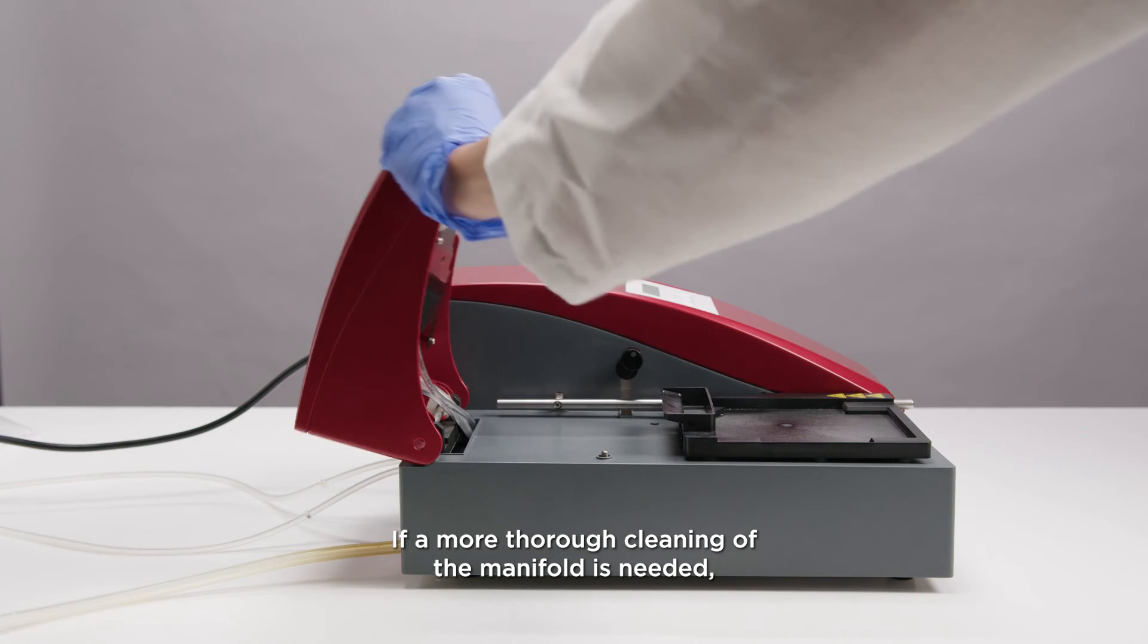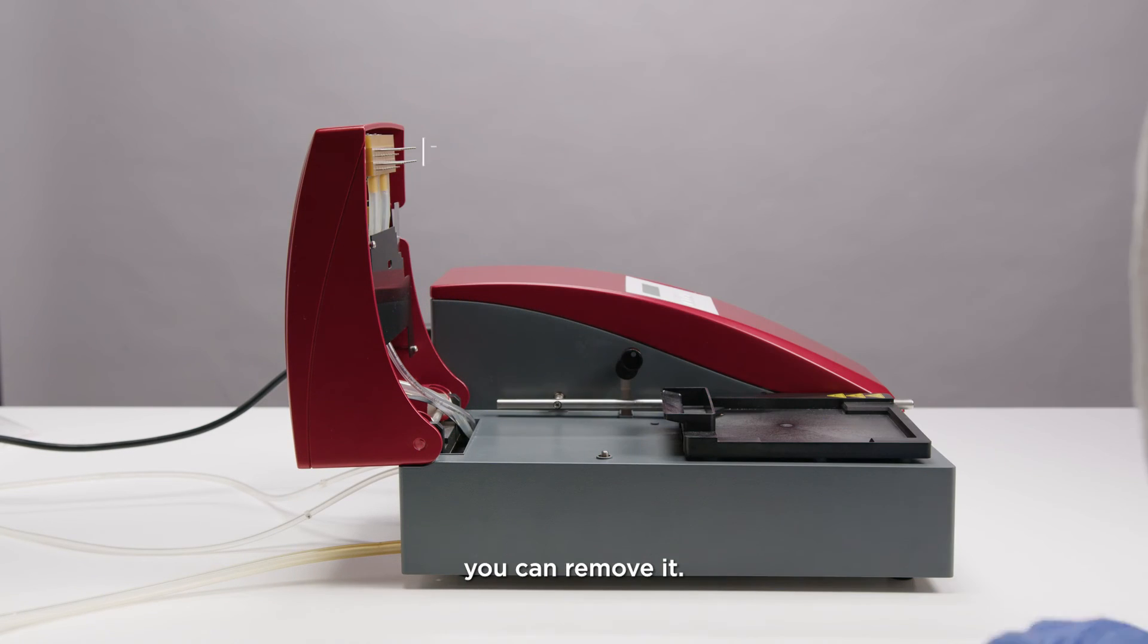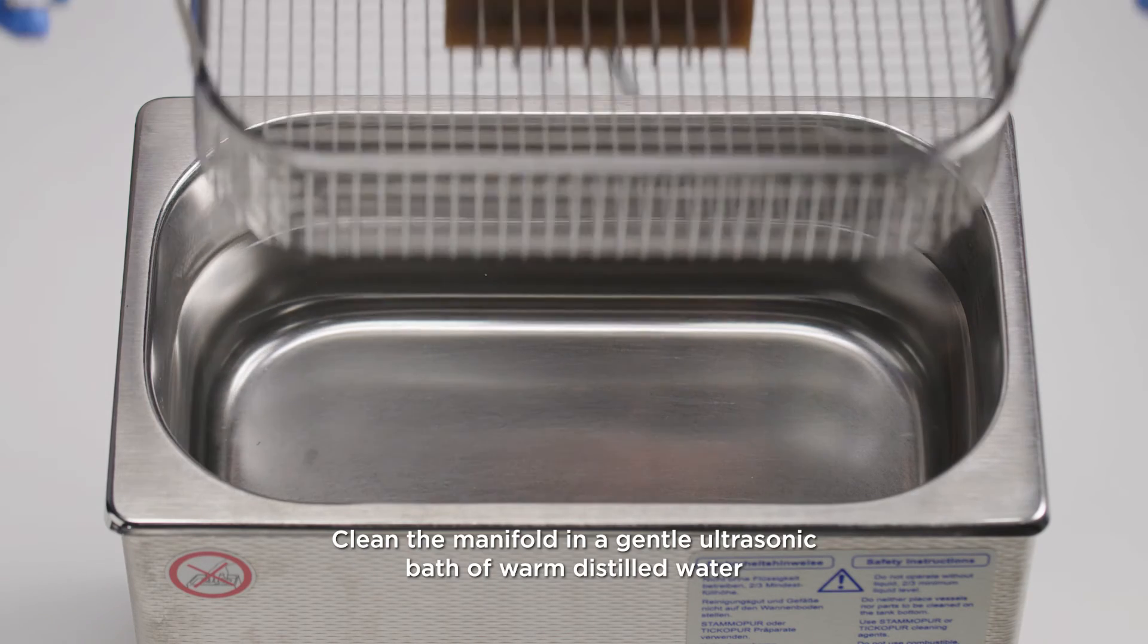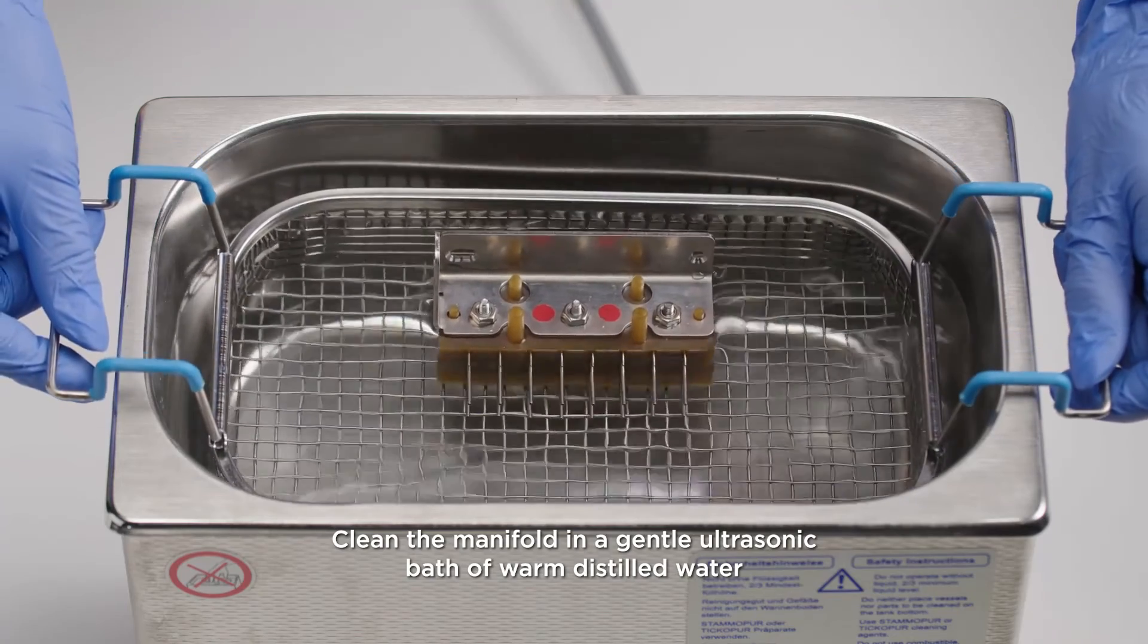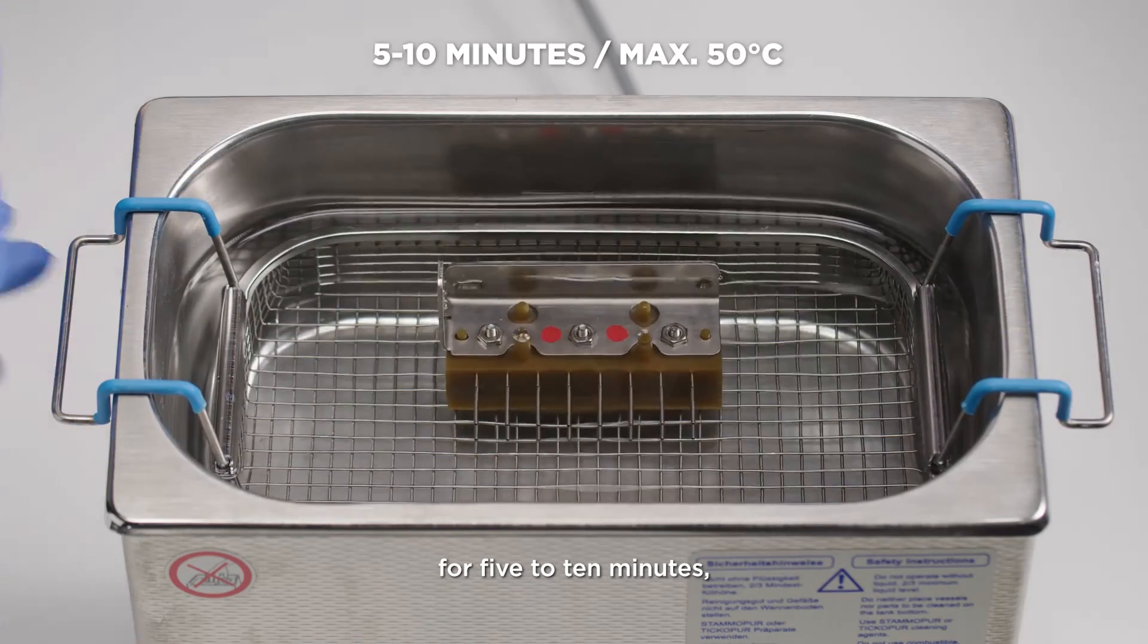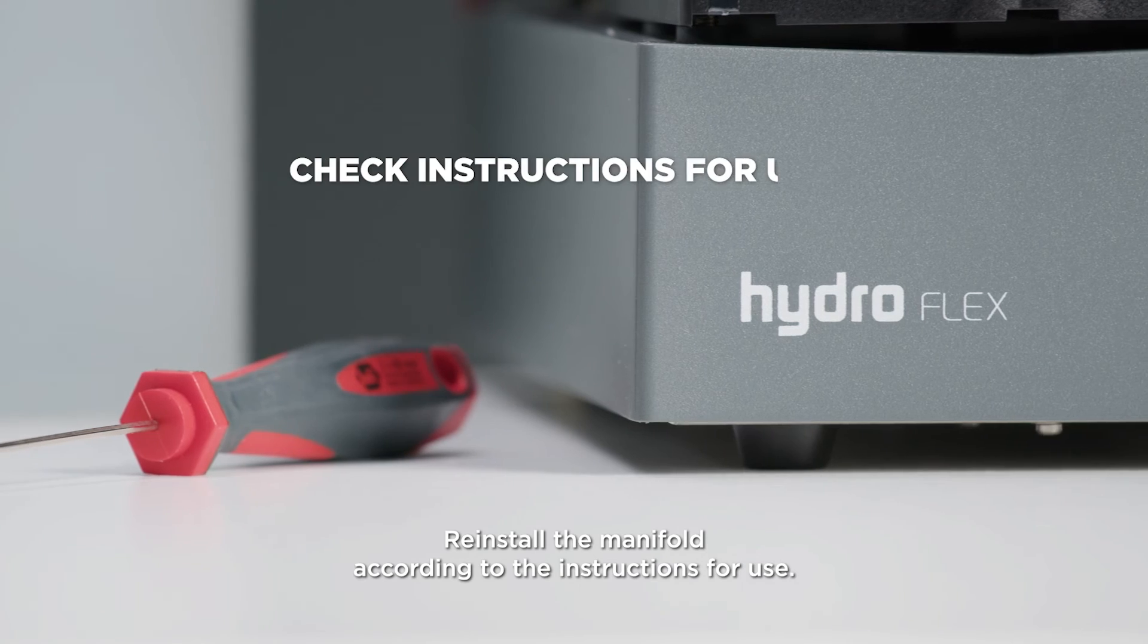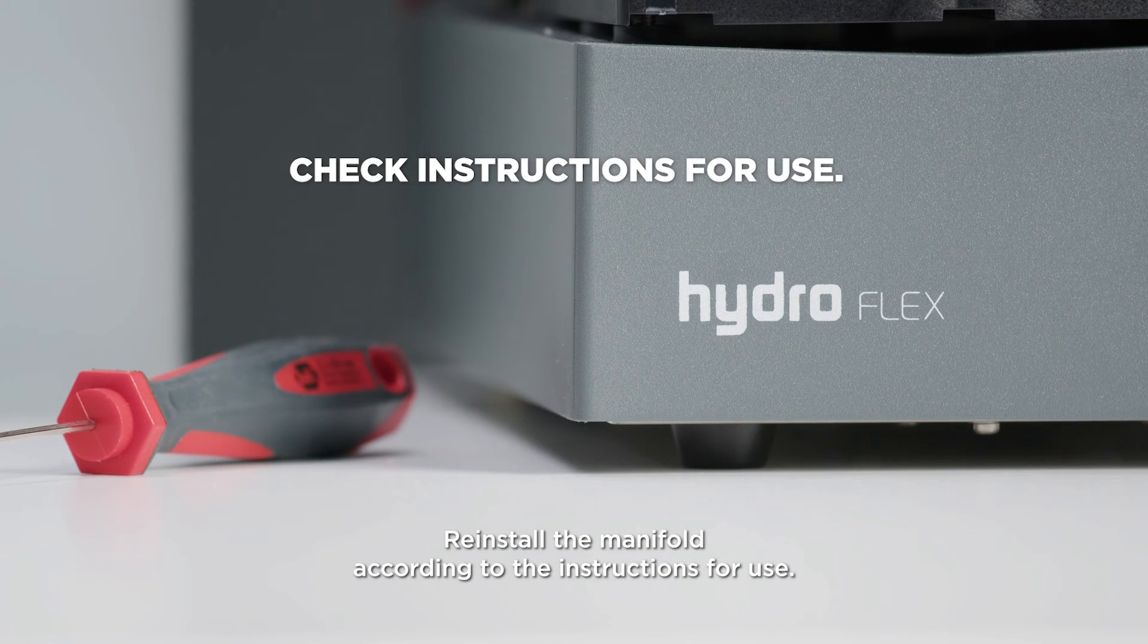If a more thorough cleaning of the manifold is needed, you can remove it. Please turn off the instrument and remove the manifold according to the instructions for use. Clean the manifold in a gentle ultrasonic bath of warm distilled water for five to ten minutes to remove salt crystals blocking the needles. Reinstall the manifold according to the instructions for use.